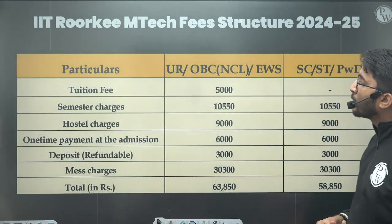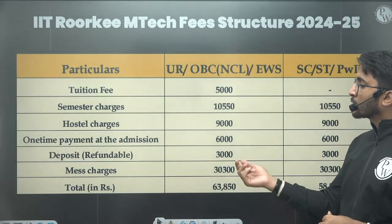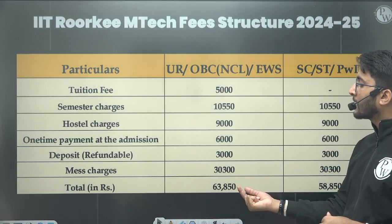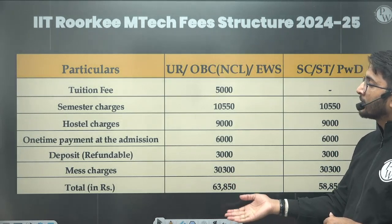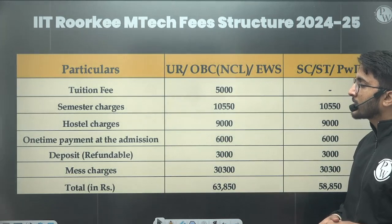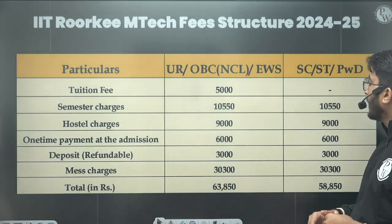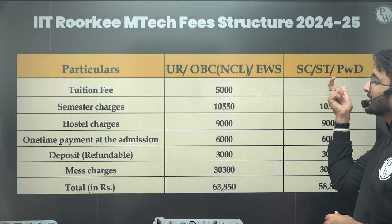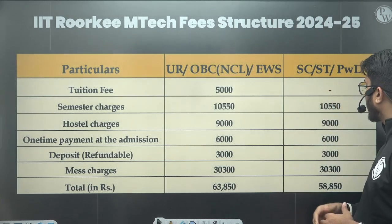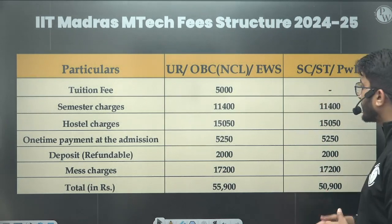For IIT Roorkee, the total fees amount is ₹63,850, which includes application fees, tuition fees, semester charges, hostel charges, and other deposits. The tuition fees is waived for SC, ST, and PWD category, so their total comes to ₹58,850.